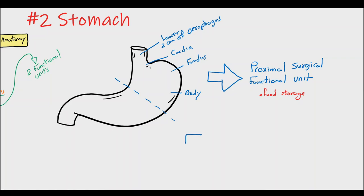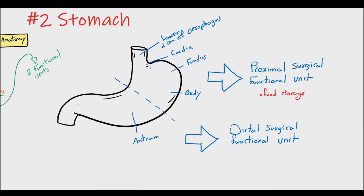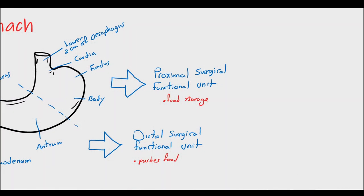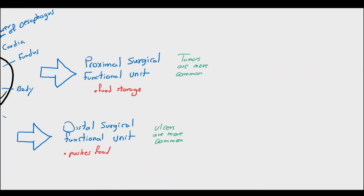Its main function is food storage. The second unit is the distal surgical functional unit, which consists of the distal part of the body, the antrum, the pylorus, and the first part of the duodenum. Its main function is to push food backwards into the stomach to mix it, and forward in small amounts through the duodenum to continue the digestion process. Each unit has its own common pathologies: tumors are more common in the proximal unit, and ulcers or bleedings are more common in the distal unit. Each also has its own surgical approach and techniques.